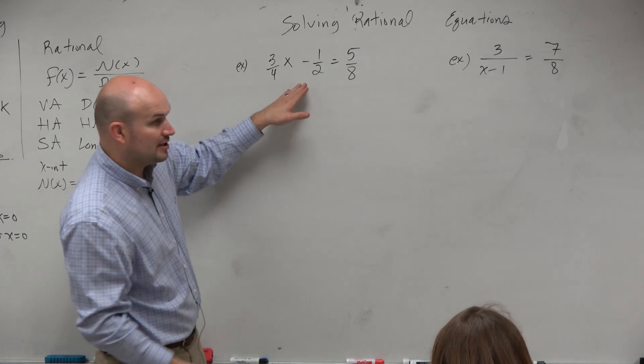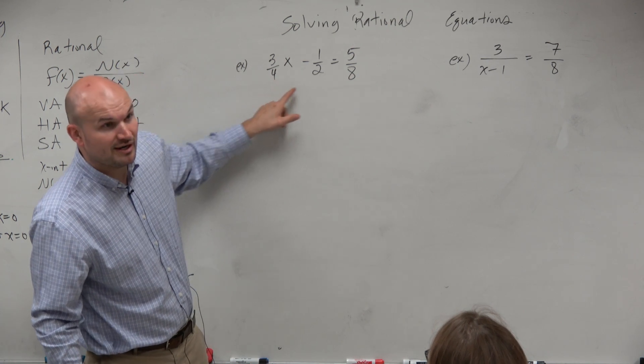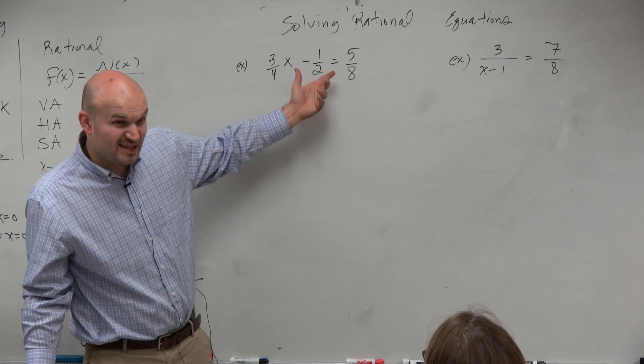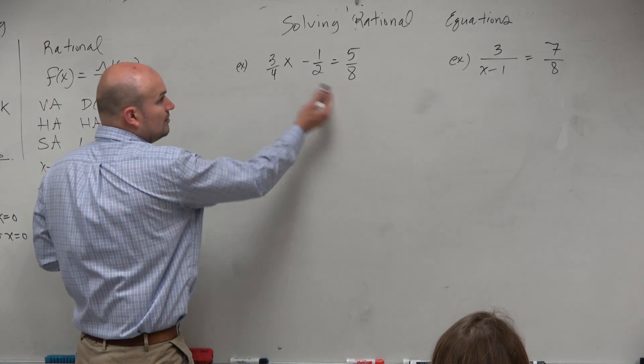So let's think about what number, what is the smallest number that 4, 2, and 8 divides into? Do we want to do 64, multiply them all together? 8. Yeah, you could do 64, but then you're going to do more simplifying later. So why don't we just identify, oh, it's just 8.